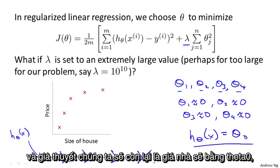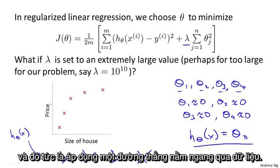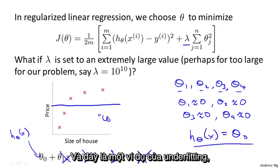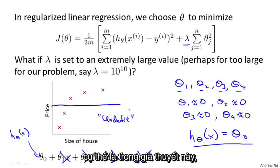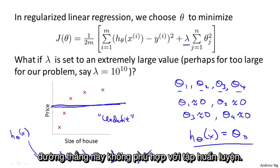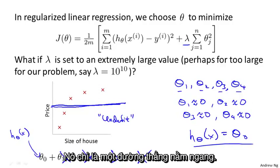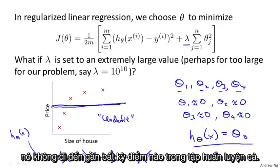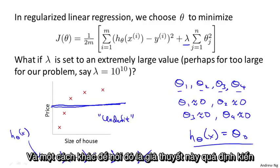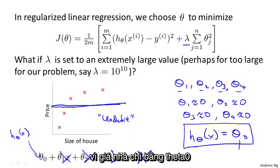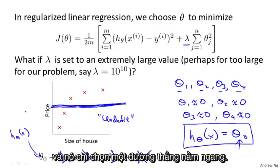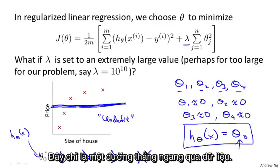It says that housing prices are equal to theta zero. And that is akin to fitting a flat horizontal straight line to the data. And this is an example of underfitting. And in particular, this hypothesis, this straight line, it just fails to fit the training set well. It's just a flat straight line. It doesn't go anywhere near most of our training examples. And another way of saying this is that this hypothesis has too strong a preconception or too high a bias that housing prices are just equal to theta zero. And despite the clear data to the contrary, it chooses to fit this sort of flat line, just a horizontal line. Fits just a horizontal flat line to the data.